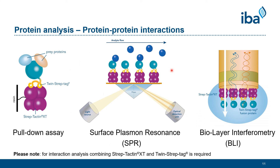Surface plasmon resonance, or SPR, is an optical biosensor application for direct, real-time, and label-free measurements. Biolayer interferometry, or BLI, like SPR, is a label-free optical biosensing technology for analyzing biomolecular interactions — for example, between antigen and antibody — in real-time, and allows quantification of binding strength and kinetics. Especially SPR and BLI are suitable for high-throughput applications. For interaction analysis, working with a high affinity between Streptactin XT and the twin StrapTech tag is recommended.